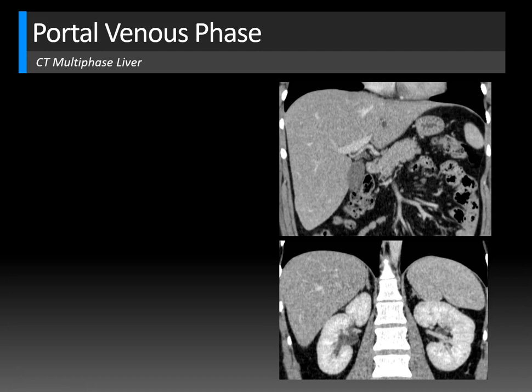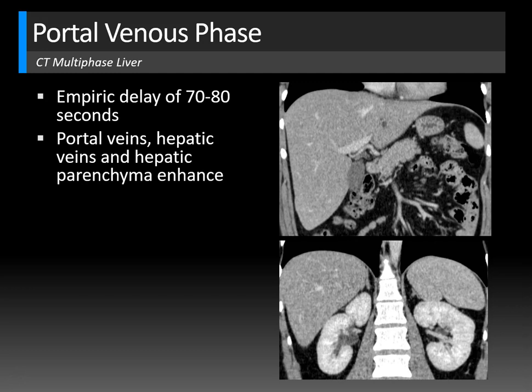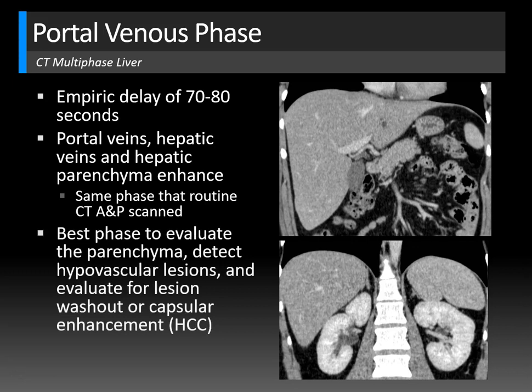After the late hepatic arterial phase, the next phase is the portal venous phase, with an empiric contrast delay of about 70 to 80 seconds. The portal veins will still be enhancing, but now the hepatic veins and hepatic parenchyma start to really enhance. This is also the same phase that most routine CT scans of the abdomen and pelvis are acquired in. The portal venous phase is the best phase to evaluate liver parenchyma, particularly for detection of hypovascular lesions and to evaluate for lesion washout or capsular enhancement typical for hepatocellular carcinoma.